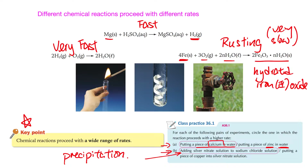If you put copper into silver nitrate solution, this is a displacement reaction. It is fast, but compared to the precipitation reaction it will be slower — it takes time for silver to form on the surface of the copper. So there is a difference in the rate of reaction.